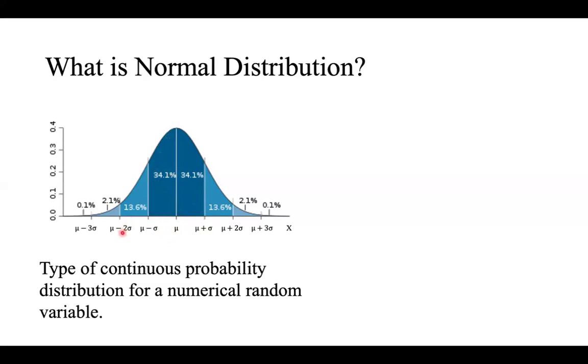If we add two standard deviations, then we have 34.1 plus 13.6, so that would be the total probability.